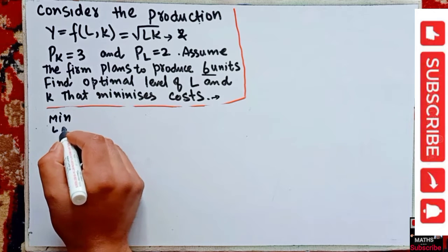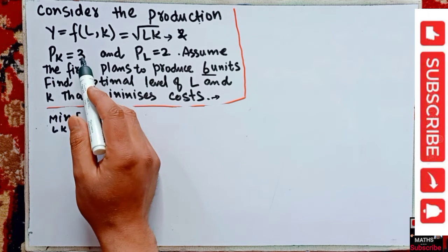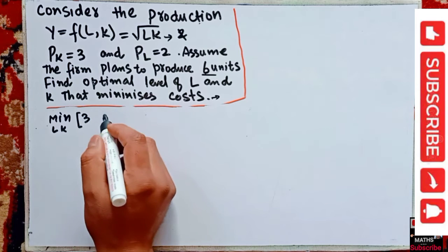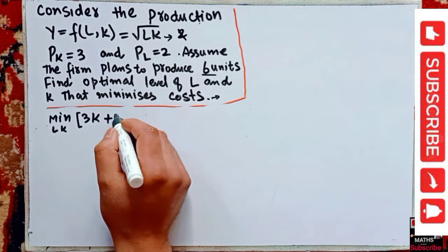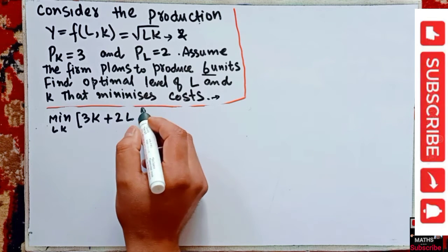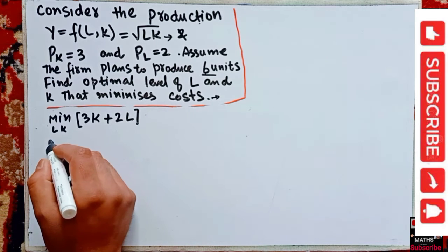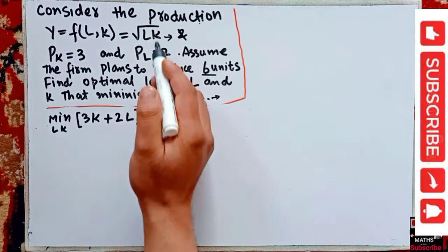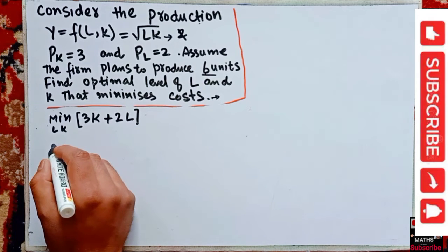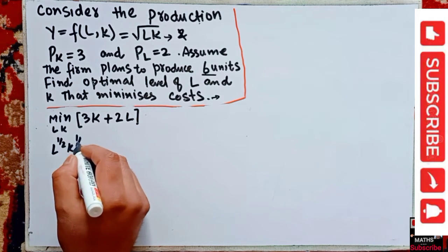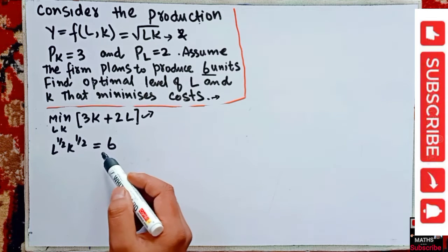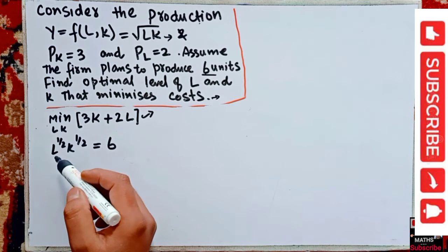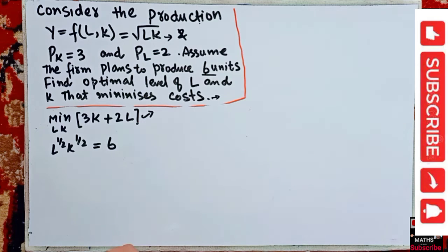We have to minimize the cost of labor and capital. Price of capital is three, so three times the amount of capital — that is 3K — plus price of labor is two, so 2L, subject to the production constraint. The production constraint is L^(1/2) · K^(1/2) = 6. That is, √(LK) should be equal to six.